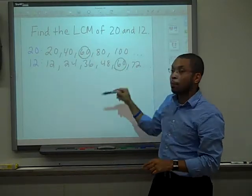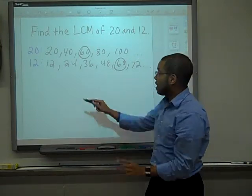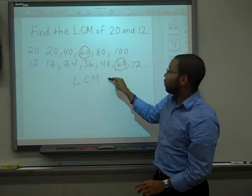So, it is shared, and it is the smallest shared multiple of both 20 and 12. Therefore, the least common multiple of 20 and 12 is 60.